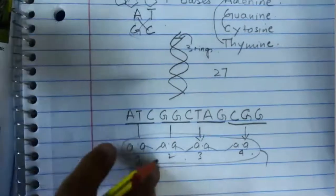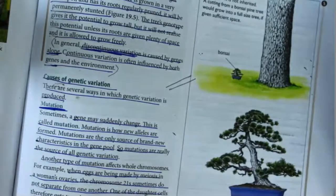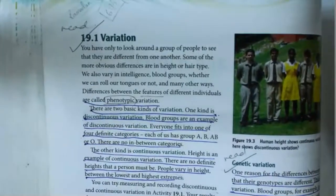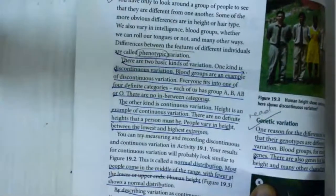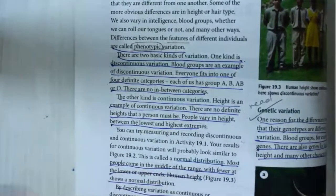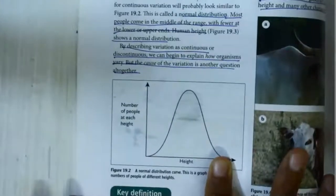Now let's get back to variation. There are two types of variation: continuous and discontinuous. Continuous variation is depicted by a bell-curve line graph.